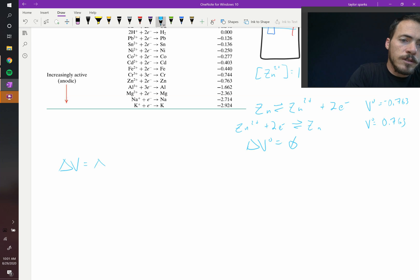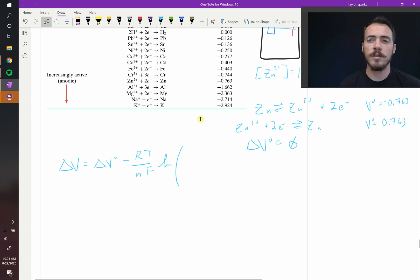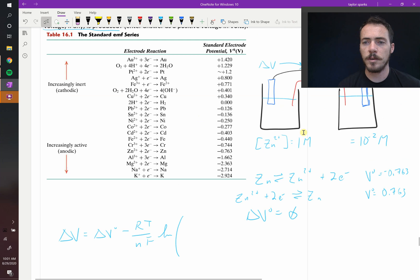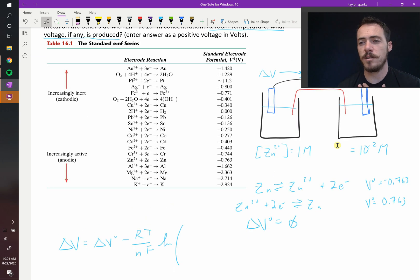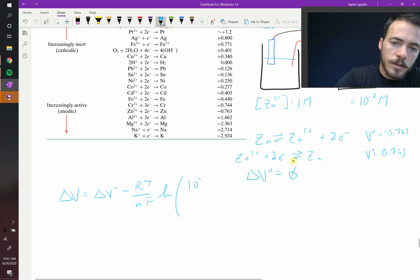Delta V is equal to delta V naught minus RT over NF natural log of the concentration of the oxidized species over the reduced species. Now, it's not clear to us which one's oxidized and which one's reduced. We've got these two zinc species. So what should we do? We should assume one gets oxidized. Assume that one gets oxidized and one gets reduced, and if the voltage is backwards, then we know that we had it wrong. So let's go ahead and write it out. Let's assume that the one that's going to get oxidized is the one that has less metal present in solution, so it's more likely to want to become oxidized. So let's do 10 to the minus 2.